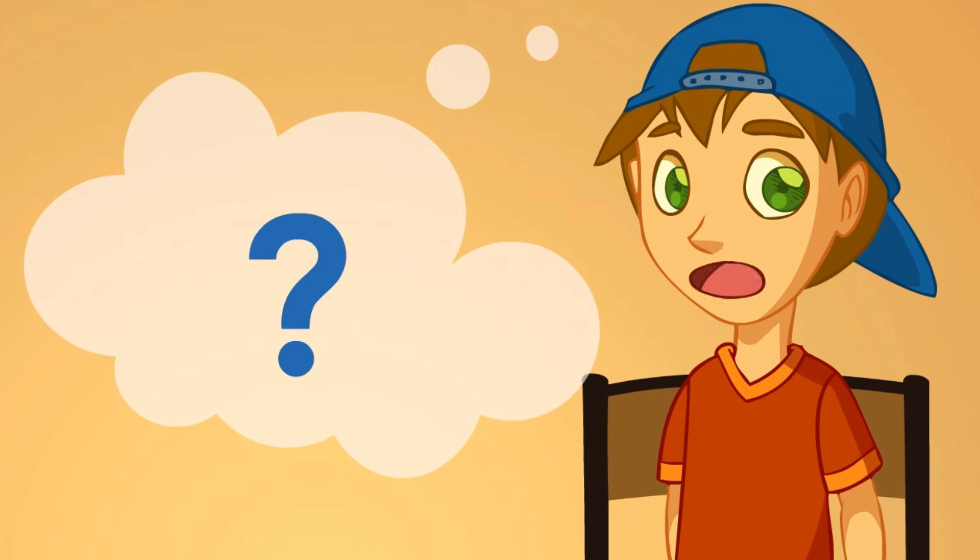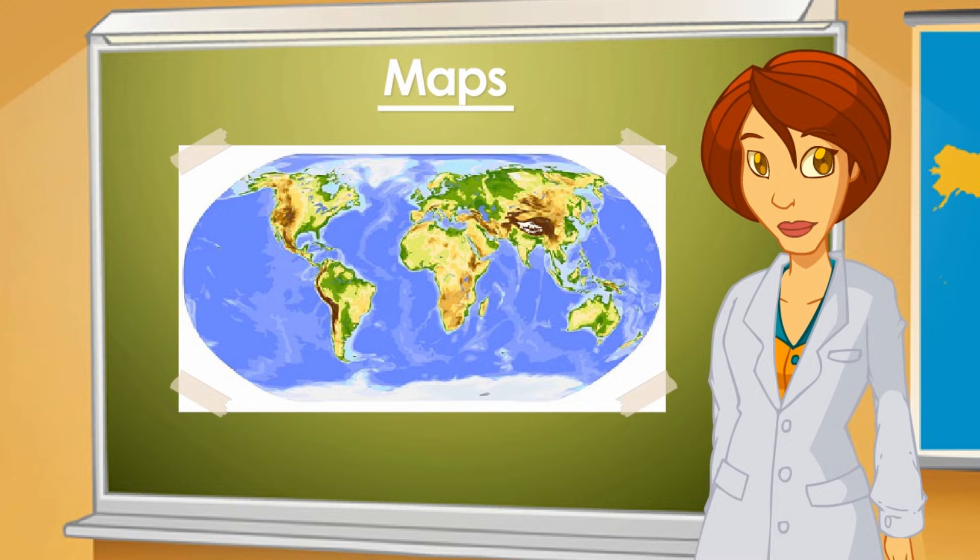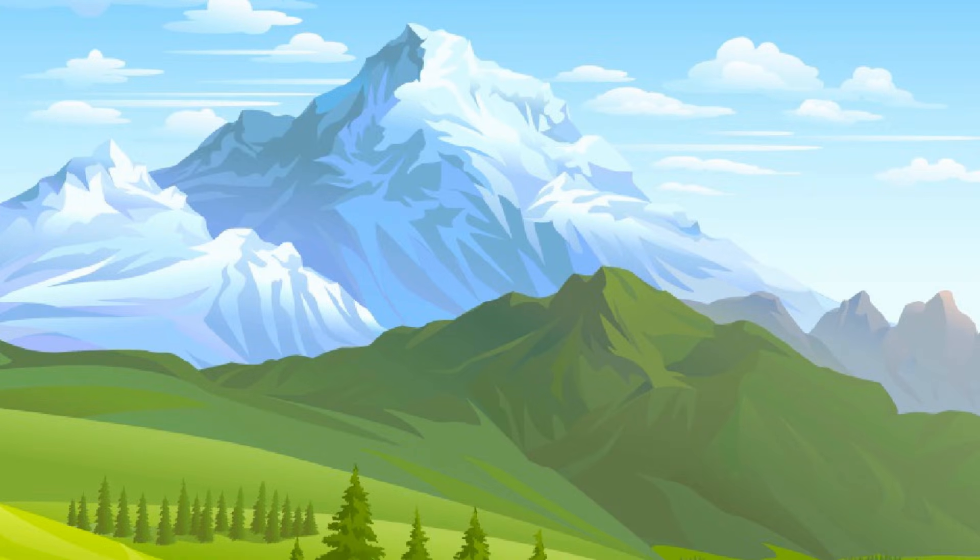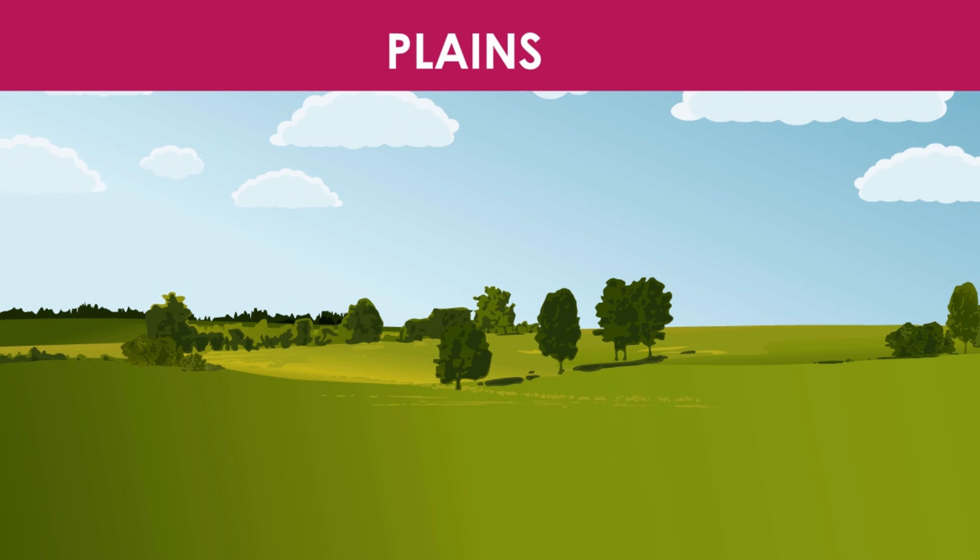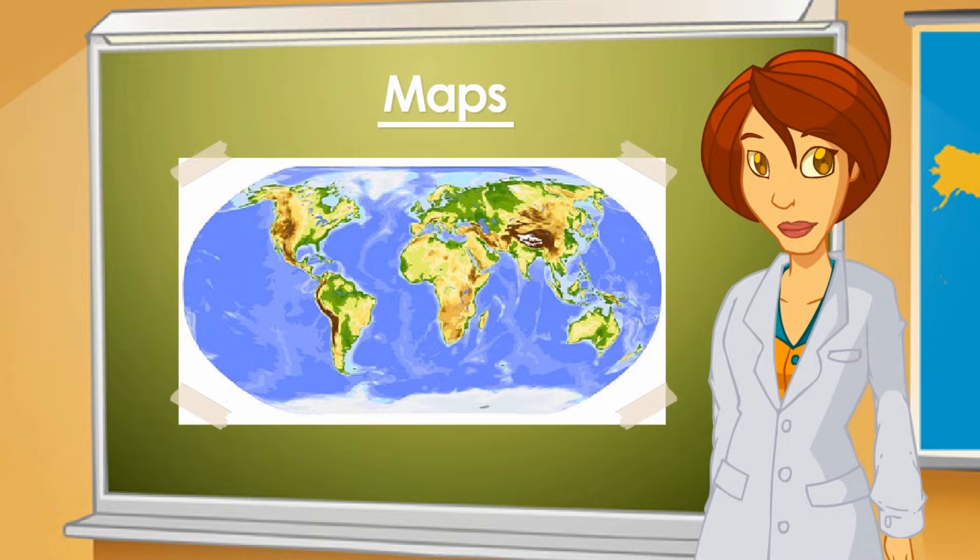But what are the valleys, hills, and plains? The highest points on Earth are the mountains. Hills are elevations of land, but they aren't as high as mountains. Valleys are areas between mountains. They're called land depressions. Plains are large areas of flat land without any mountains or hills, where the level of the land is always the same.